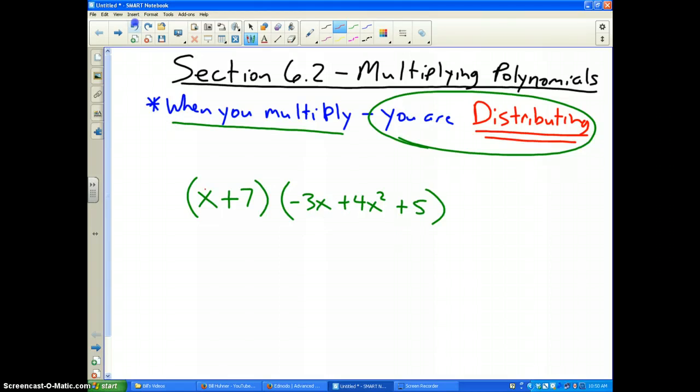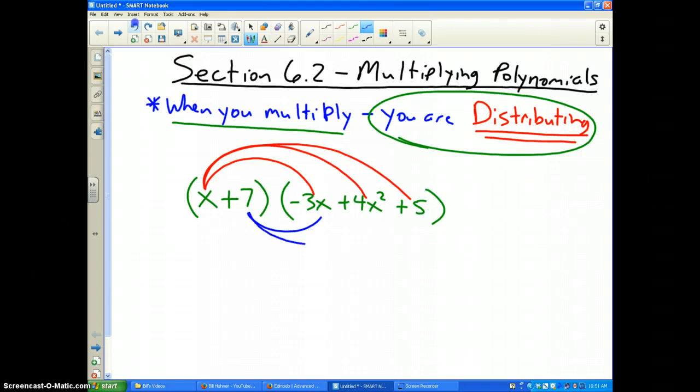So basically, you'd have to take x times the first term, x times the second term, and x times the last term. And then you would have to take the 7 times the first term, the 7 times the second term, and the 7 times the third term, and then simplify your answer. Every term in the first polynomial has to be multiplied by every term in the second polynomial.